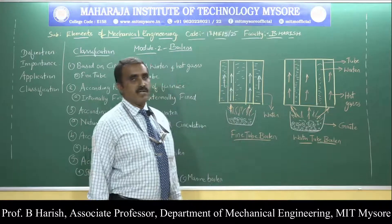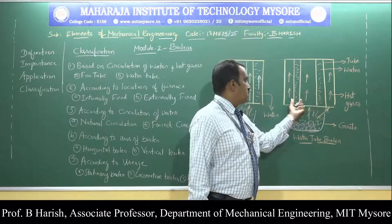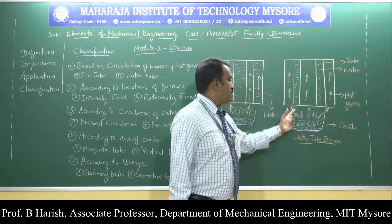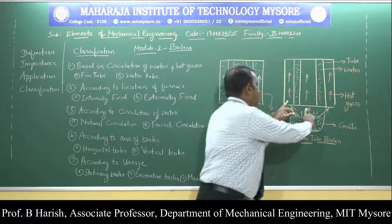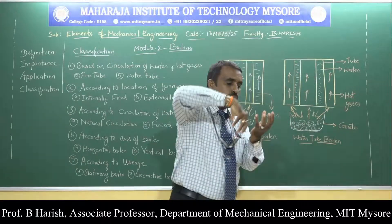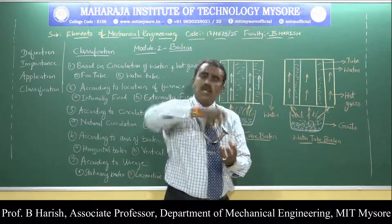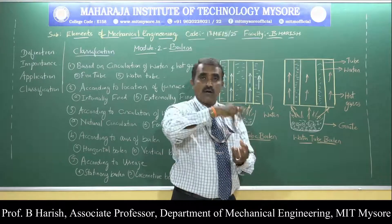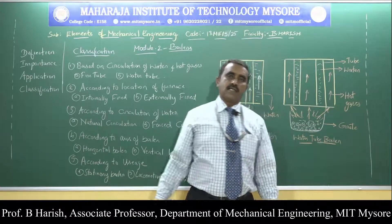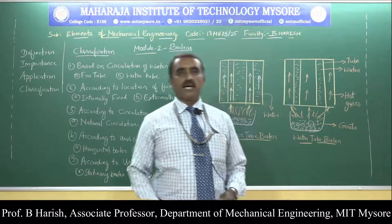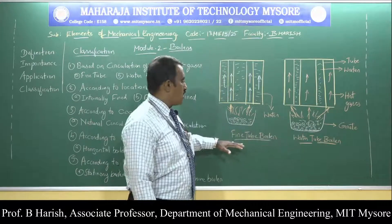The second type is the water tube boiler, where water circulates inside the tubes. Hot gases obtained from combustion of fuel pass through the passages around the water tubes. When hot gases circulate around the water tubes and come in contact with the water, the temperature of water rises until it converts into steam, which is utilized for various applications. This is the most general classification — water tube and fire tube boiler.